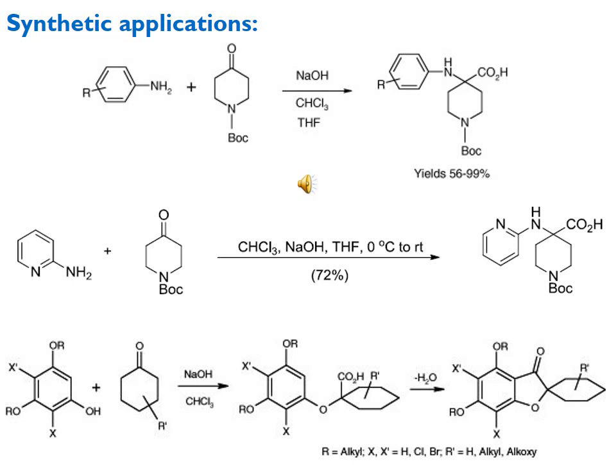A further application uses phenol or alcohol with different substituents, where X and X' can be hydrogen, chloro, or bromo, and R forms an alkoxy group. This reacts with a cyclic ketone having R' substituents under sodium hydroxide and chloroform conditions to give a carboxylic acid product. The reaction proceeds further — the benzene ring acts as nucleophile, attacks the carboxylic acid carbon ion, electrophilic aromatic substitution occurs, and with removal of water a cyclic fused ring product is obtained.